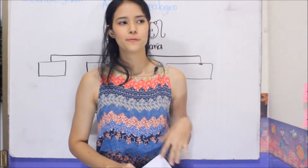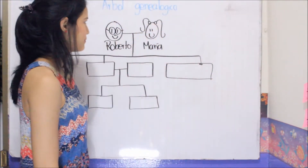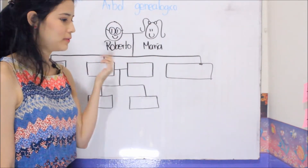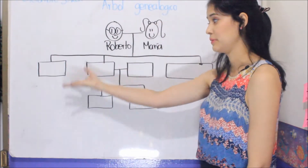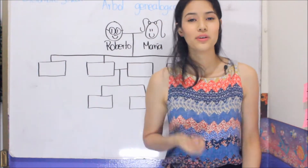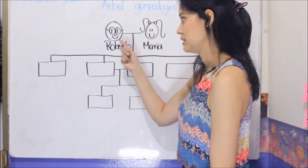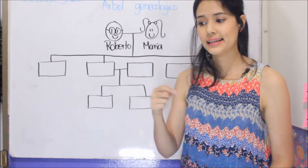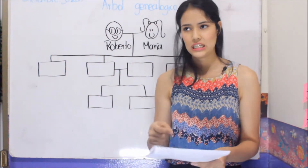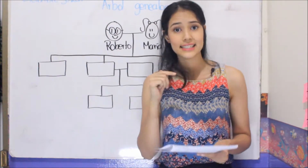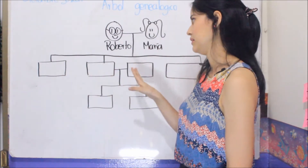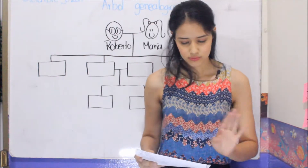Ok, let's do a challenge for your reading comprehension in Spanish. Here we have a family tree — in Spanish it is called 'árbol genealógico'. I'm going to read for you in Spanish all the names of these family members. What you have to do is try to draw this scheme in your notebook or on a sheet of paper, and listen to me in Spanish, trying to place each family member where they belong.